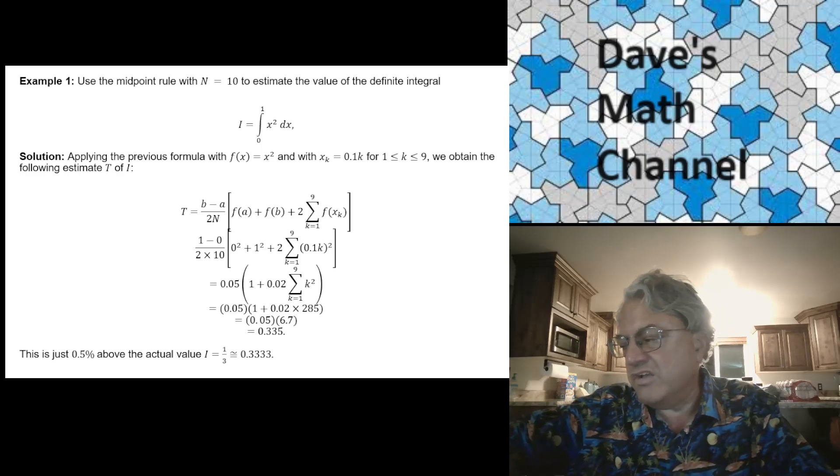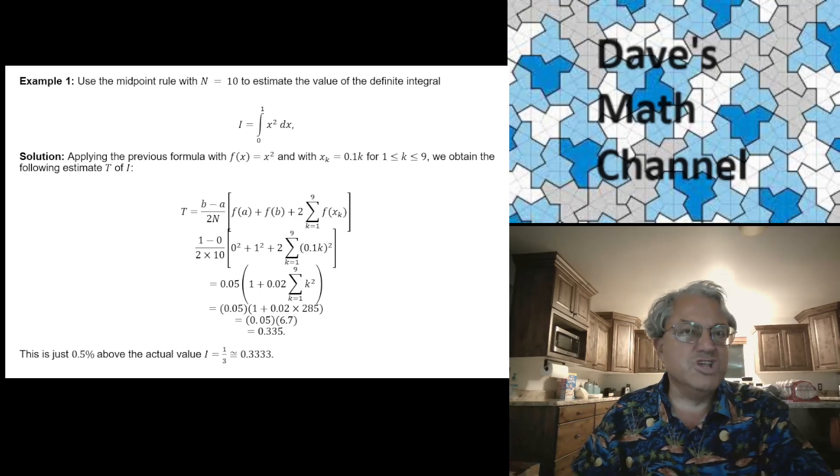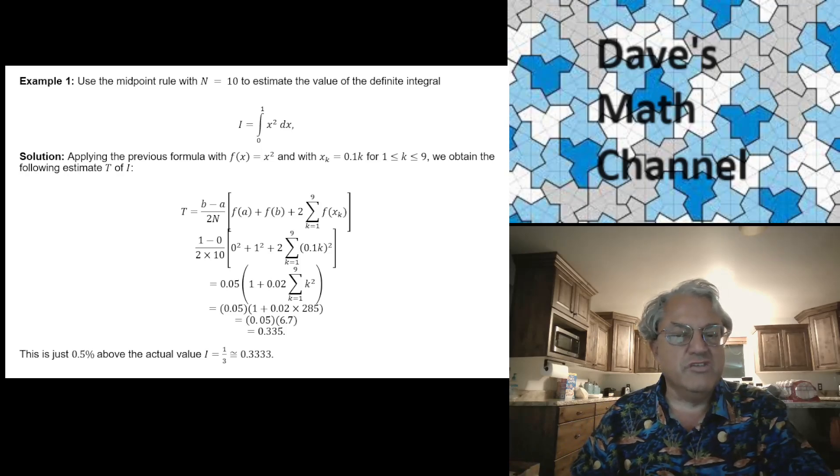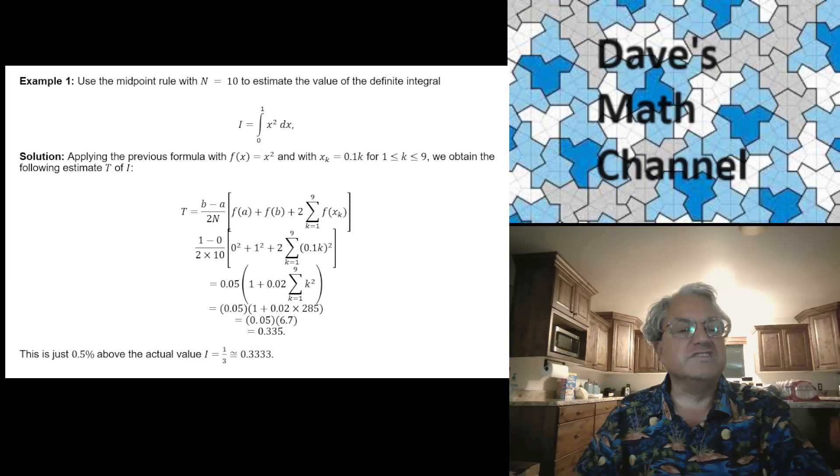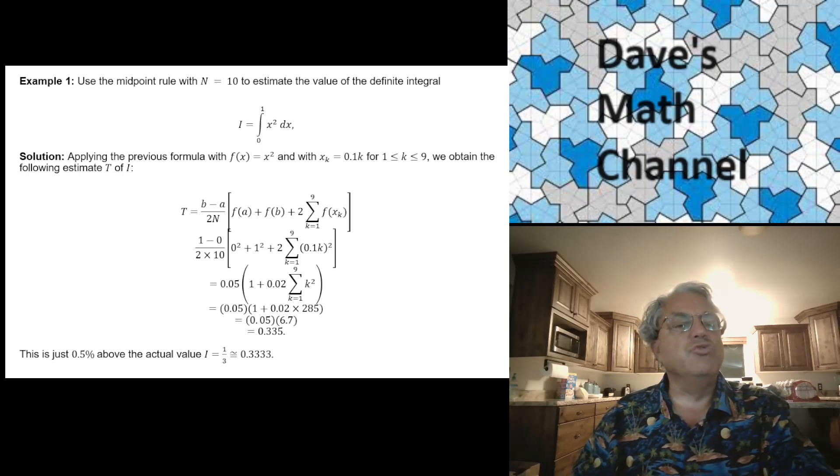It turns out that just like the midpoint rule always gives you the exact answer for linear functions, trapezoid rule does too. I don't think it's too hard to see why that's true. Because you're sampling points that are already on the line you want. When you're doing your sampling, you get the exact region that you're trying to integrate. But this is a non-trivial case, x squared. This is a parabola.